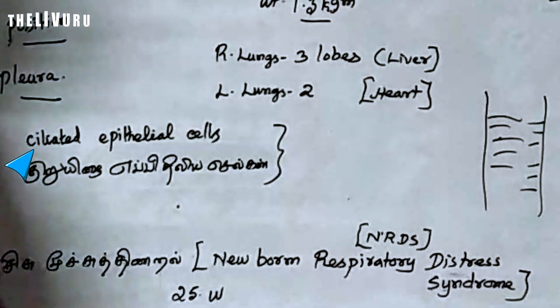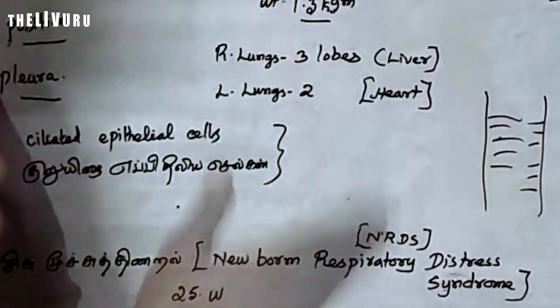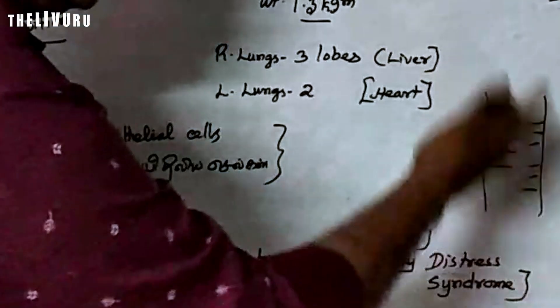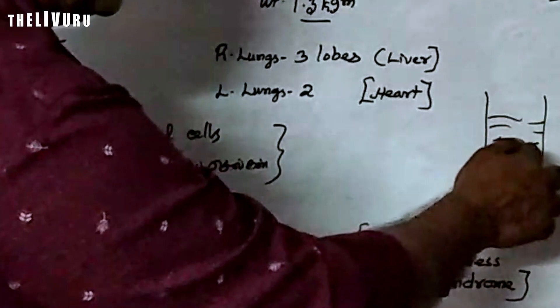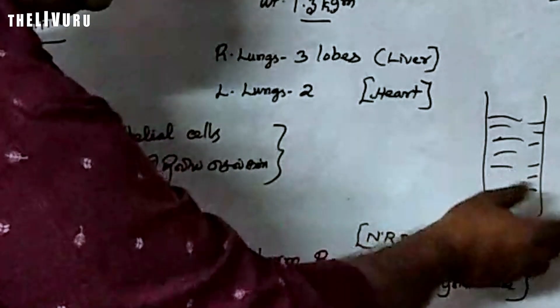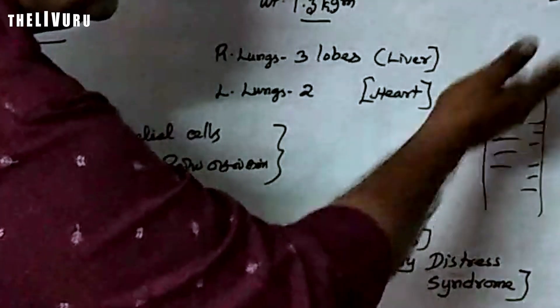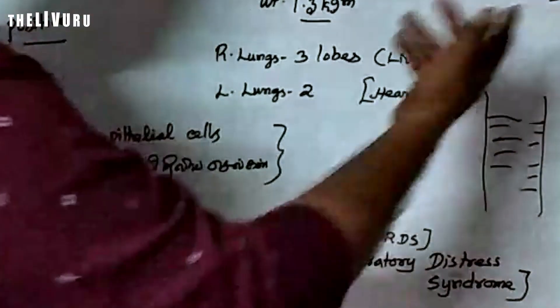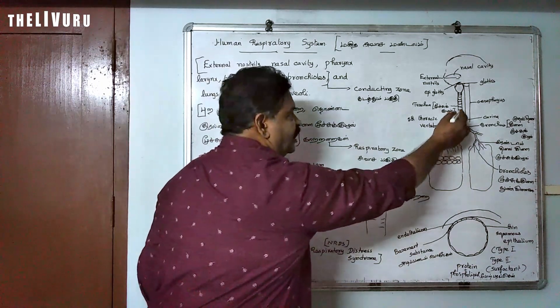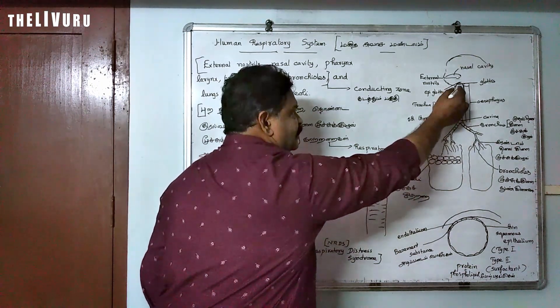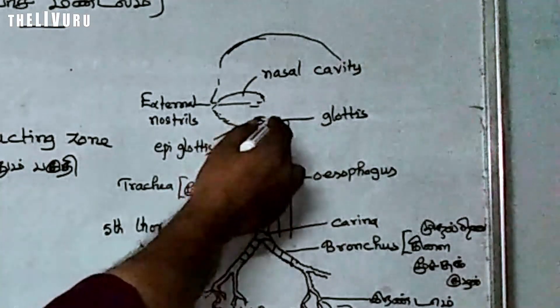This is the pathogen. The ciliated epithelial cells and goblet cells help trap and remove pathogens and dust particles from the inhaled air.